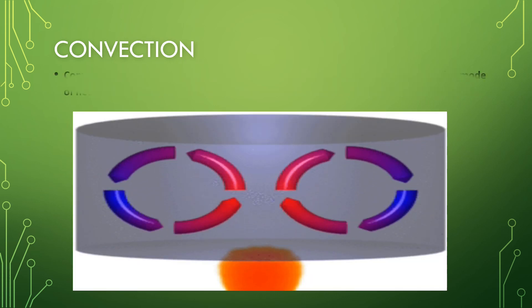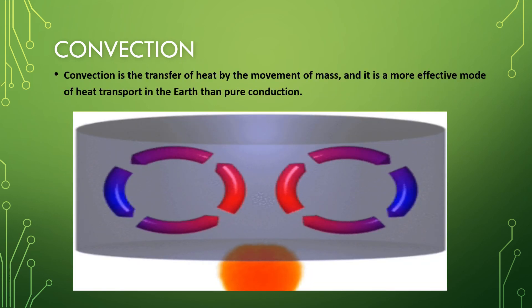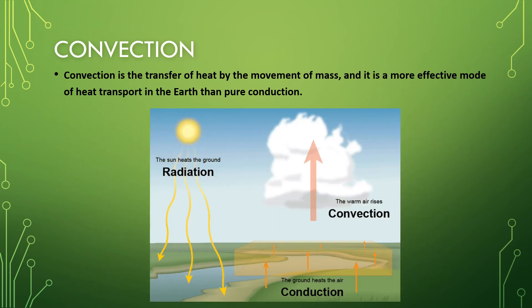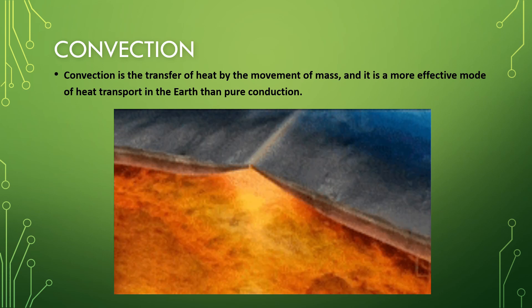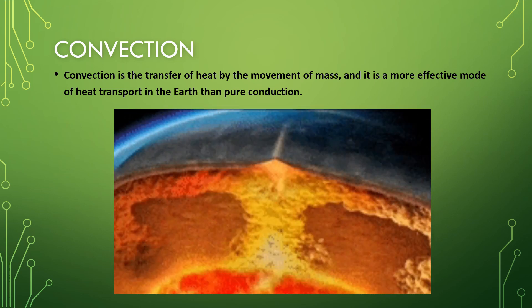Convection is the transfer of heat by the movement of mass and is a more effective mode of heat transport in the Earth than pure conduction. Convection dominates the thermal conditioning zones with significant amounts of fluid or molten rock and thus governs the heat transport in the fluid outer core and the mantle.